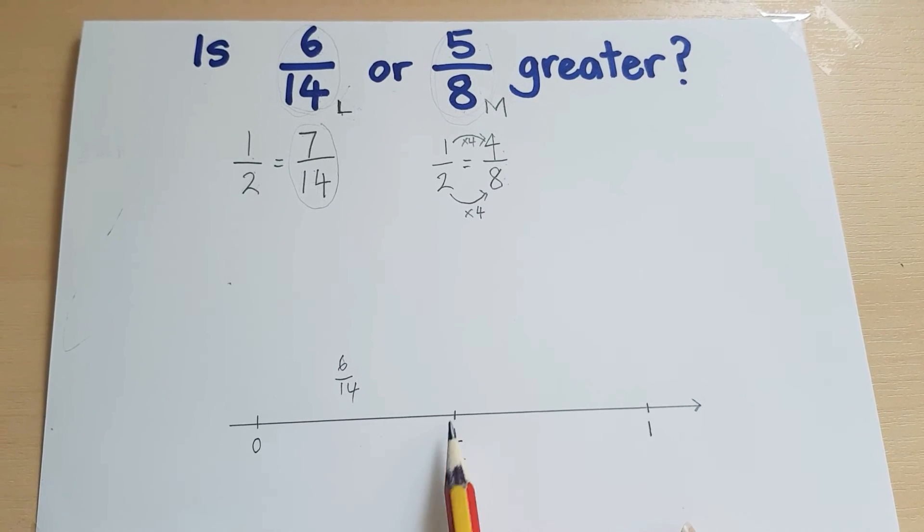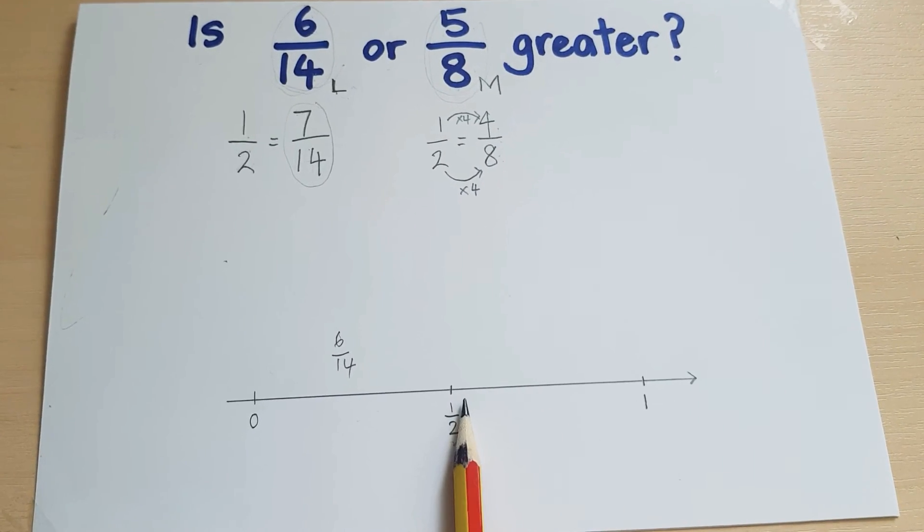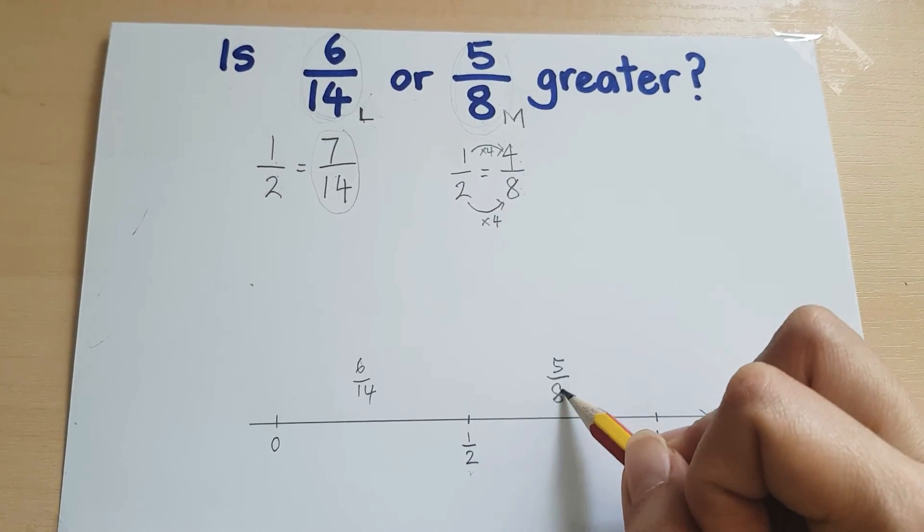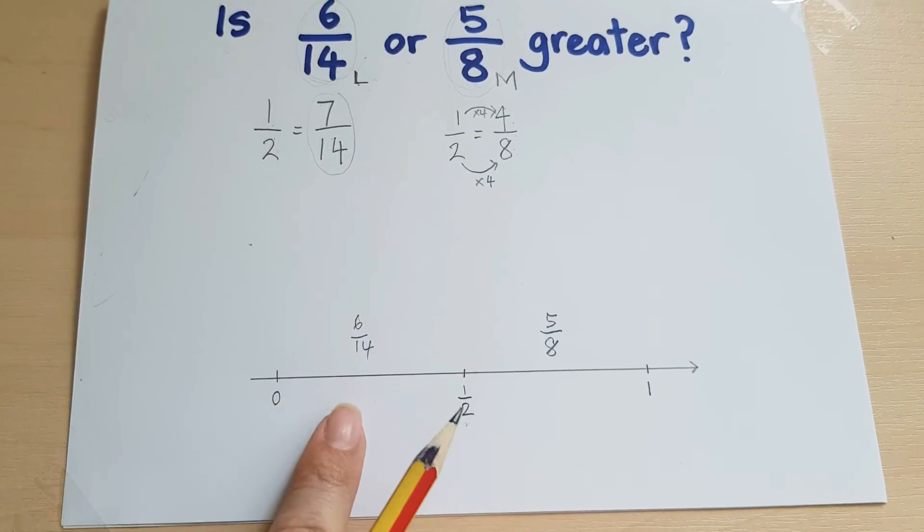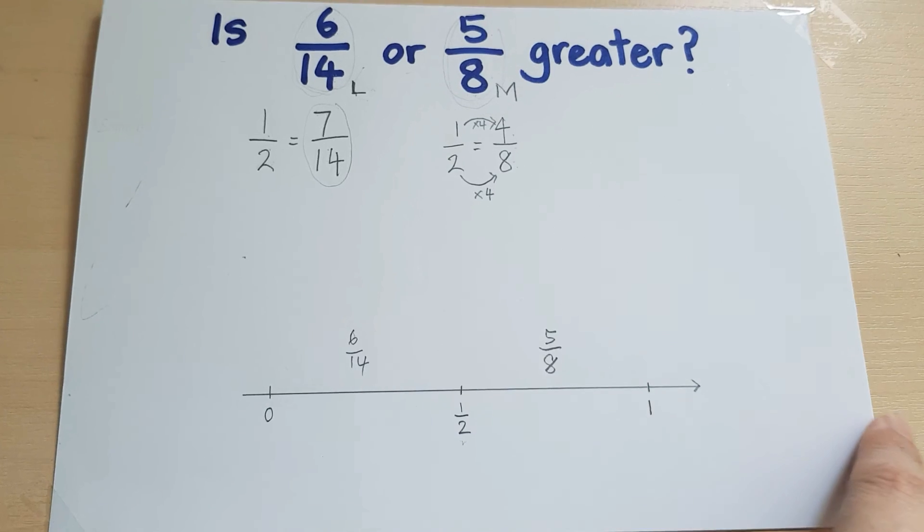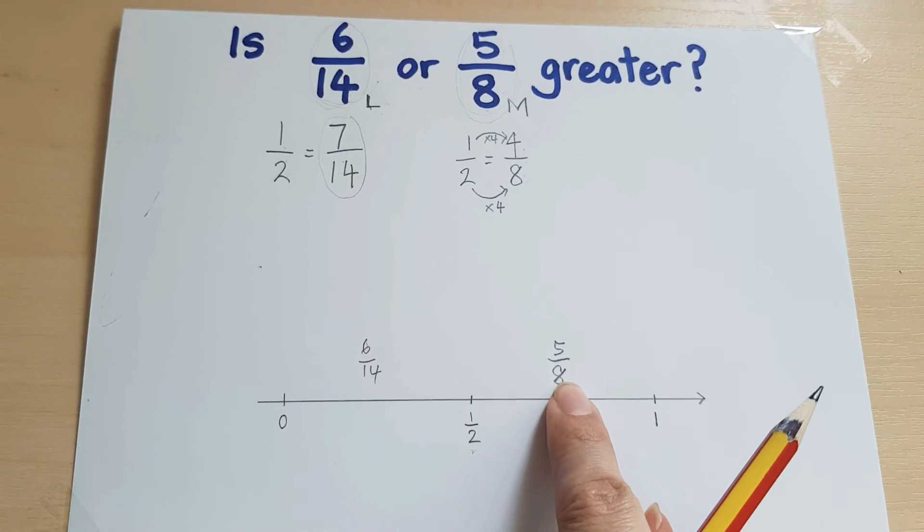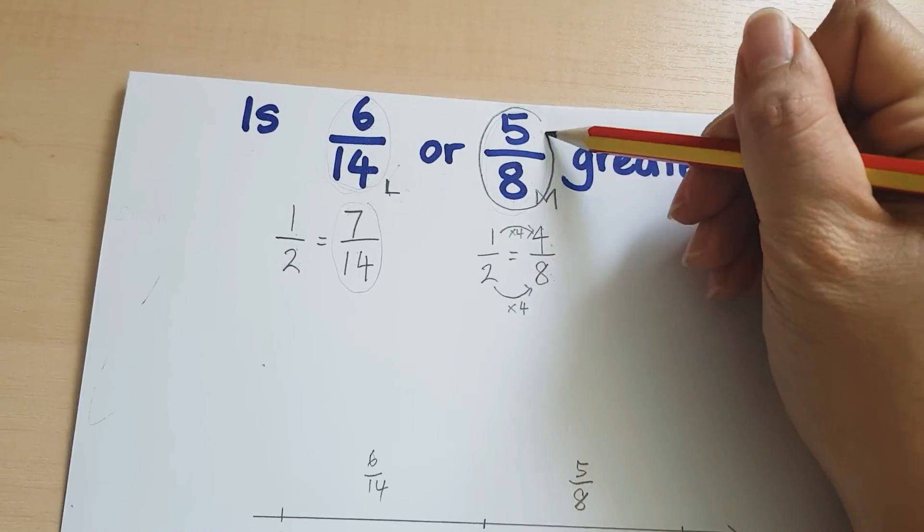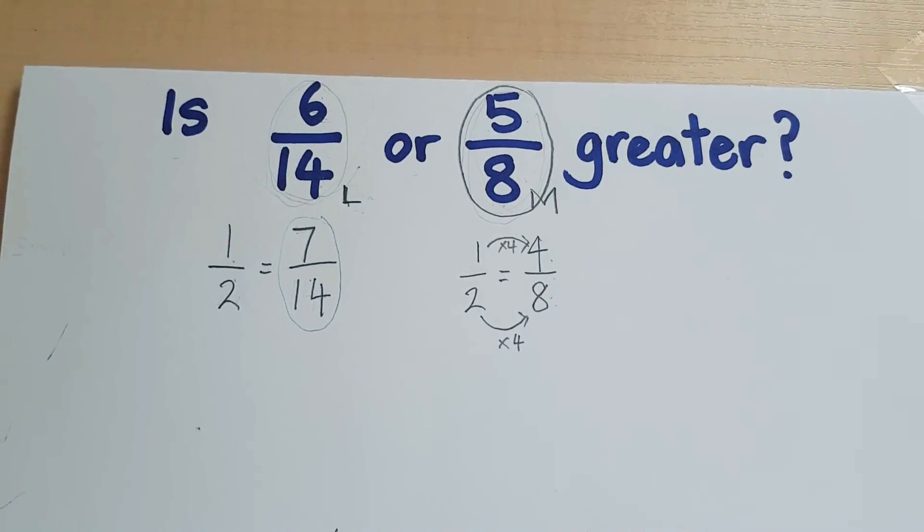And 5/8 is more than half. If half is here, more would be to the right. So I'm going to put 5/8 here. In the number line, we know that it increases towards the right. So obviously 5/8 is greater than 6/14. So 5/8 is the greater fraction.